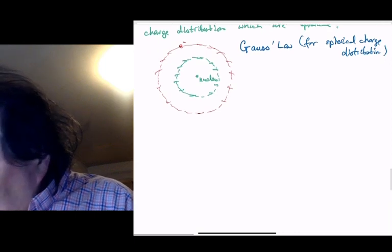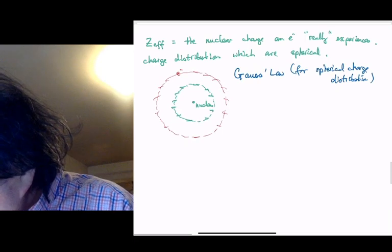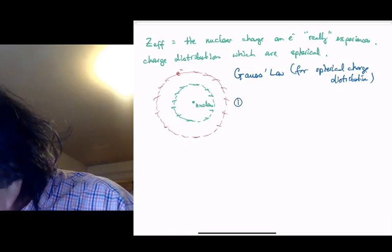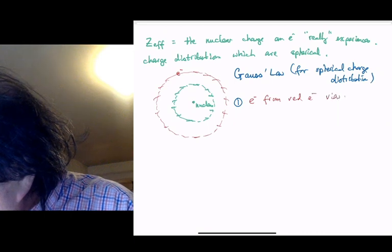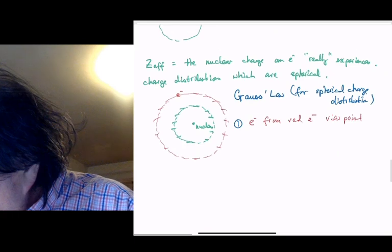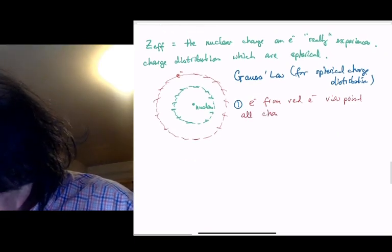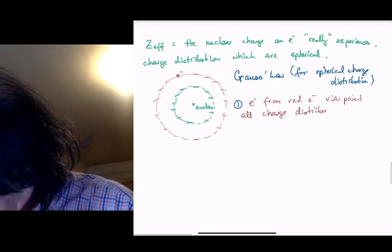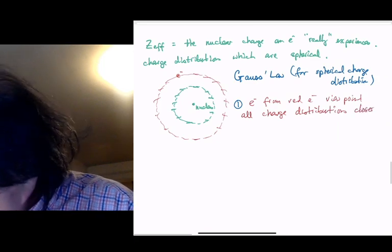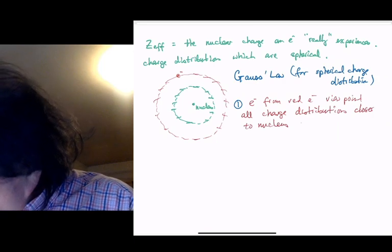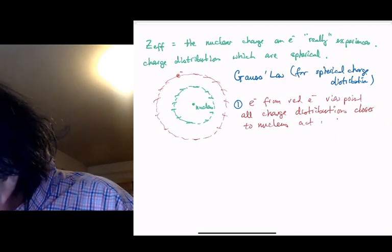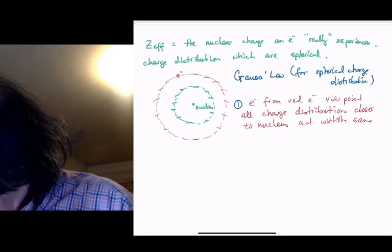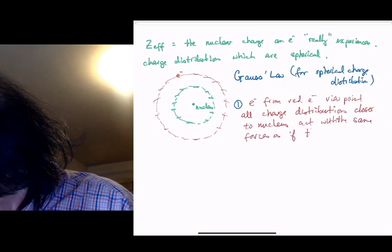And it has two parts. One, let's look at it from the point of view of the red electron. From the red electron's viewpoint, all charge distributions closer to the nucleus act with the same forces as if they were located at the nucleus.